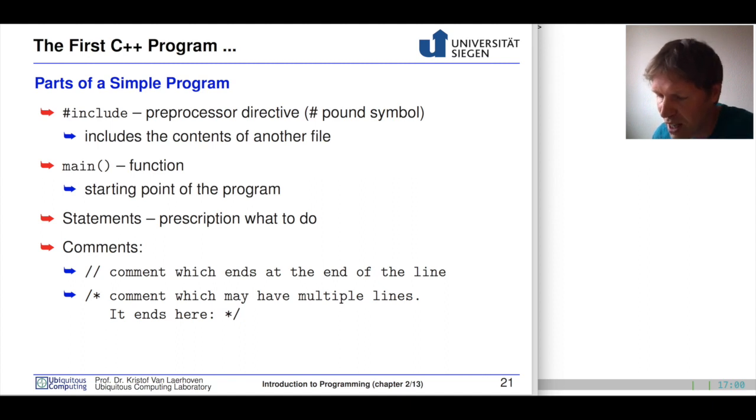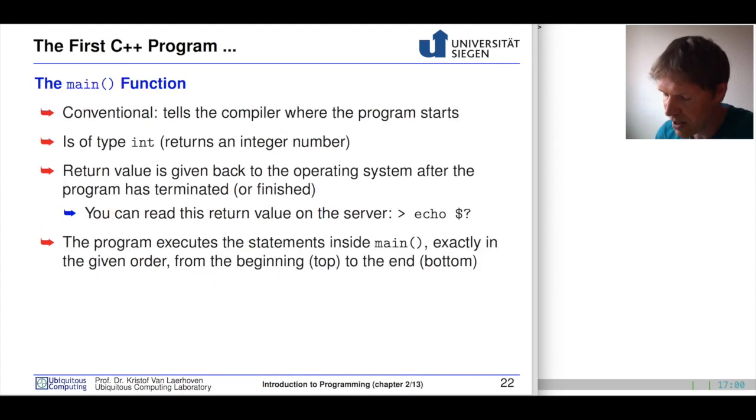The main function tells the compiler where the program starts and in which order these commands that we just saw are executed. Our first command was printing this line, hello there or hi there. The second thing that's then after that was executed was a return statement, which would return back to the operating system with code zero.